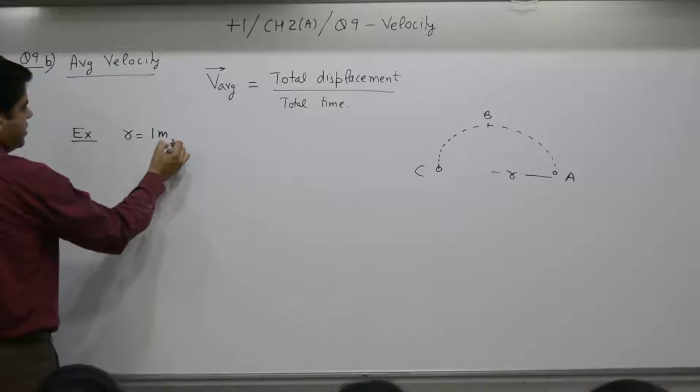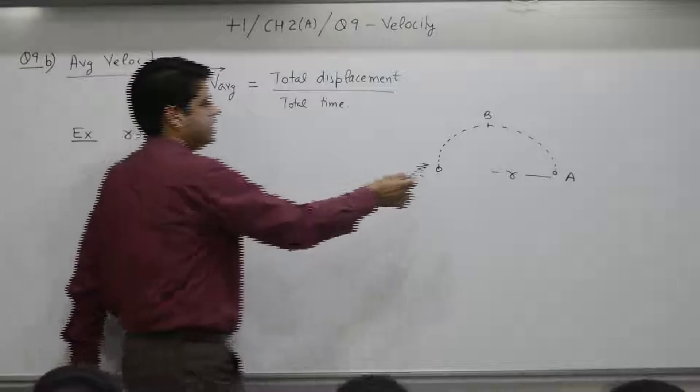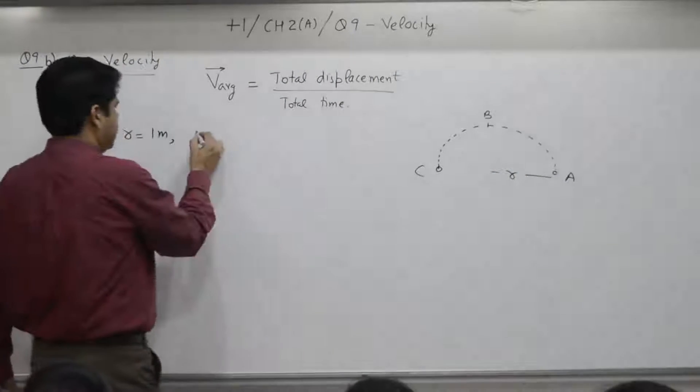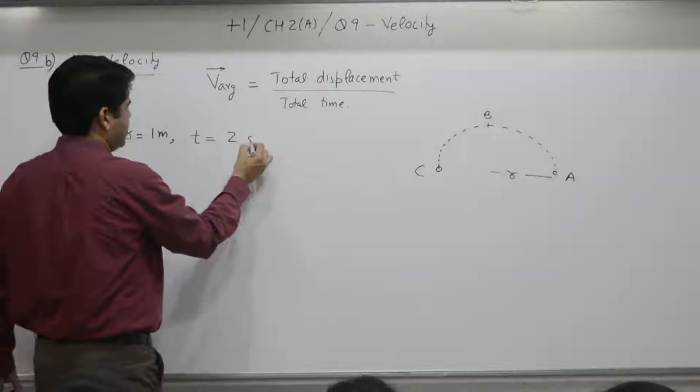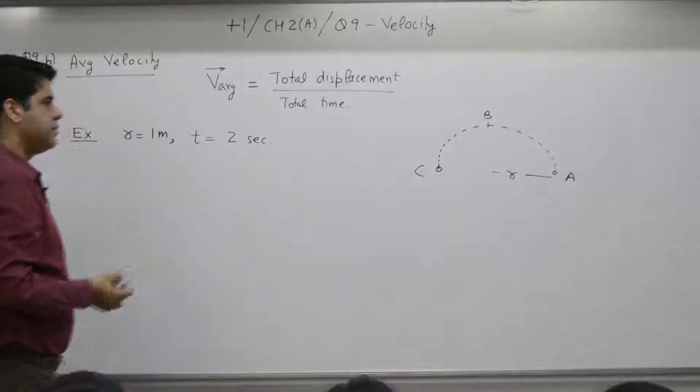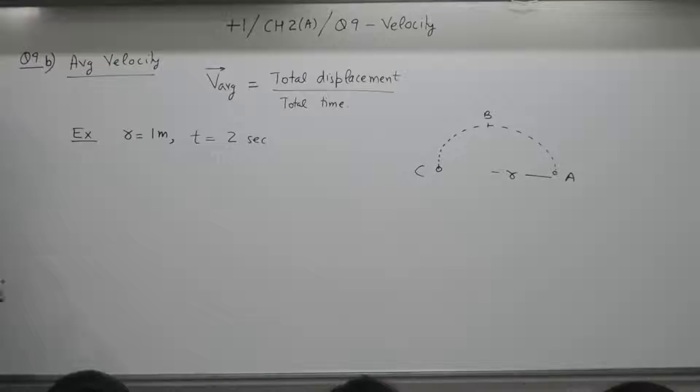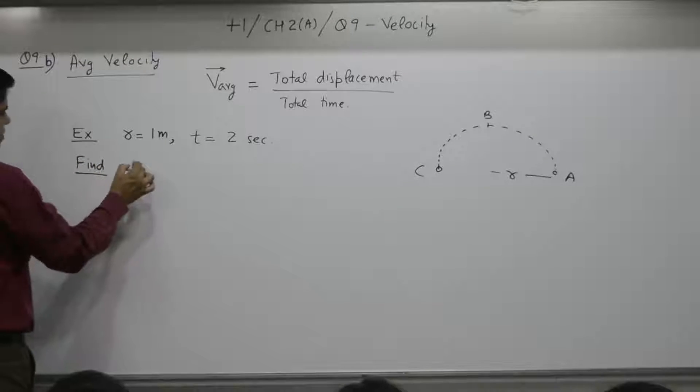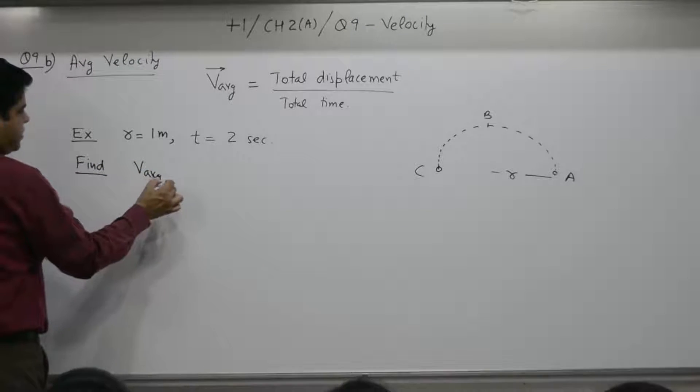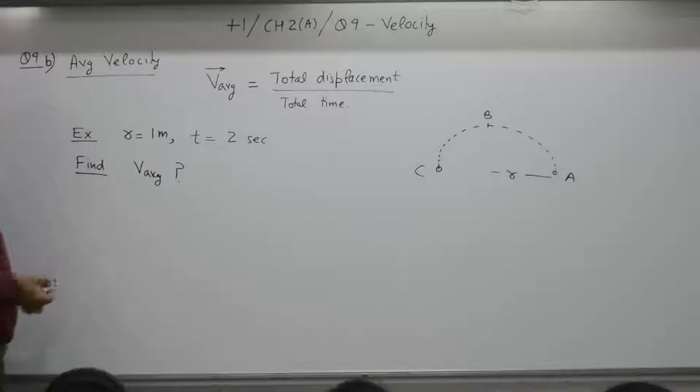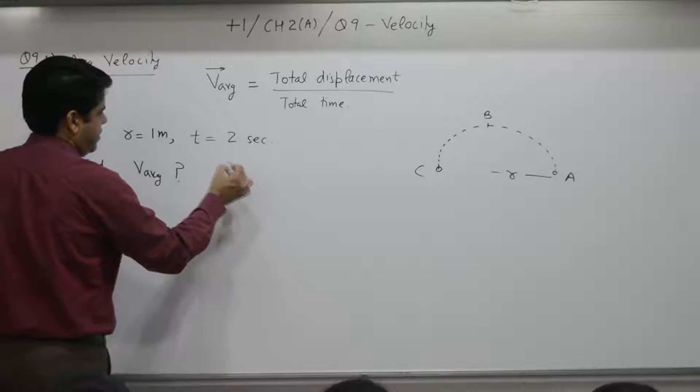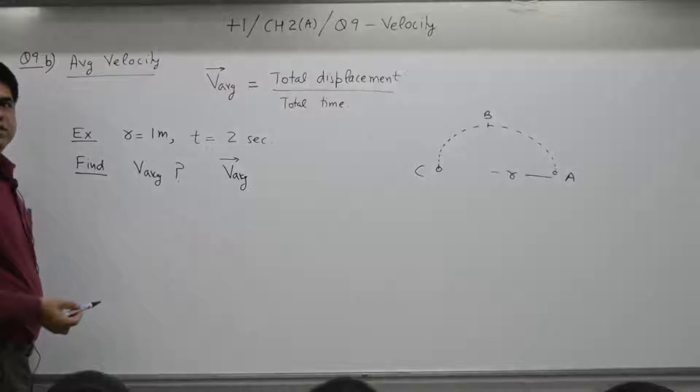1 meter. How much time it takes from A to C? 2 seconds. Find average speed and average velocity.